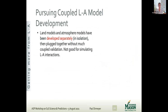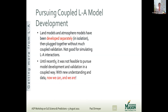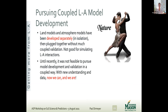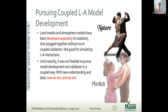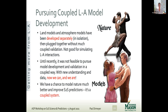To wrap up: land models and atmosphere models have been developed separately and sort of plugged together, but it's a coupled system and we need to consider model development as a system. The coupling is very important for predictability and prediction. Until recently, we didn't have in-situ or satellite data of good enough quality or coverage to do proper validation, but now we can and we're starting to do that. Nature, land, and atmosphere are involved in a beautiful, elegant dance. Our models historically have not represented this in a very elegant or realistic fashion, but now we have a chance to model nature much better and improve our S2S predictions.